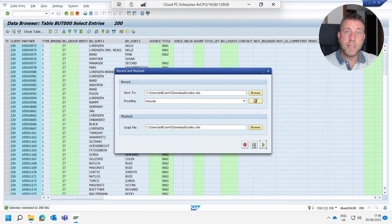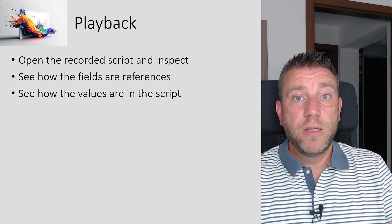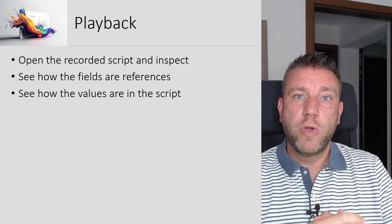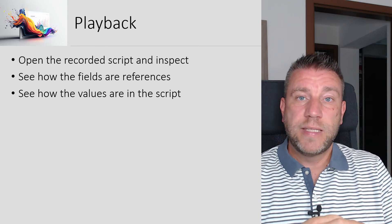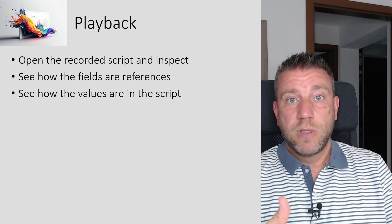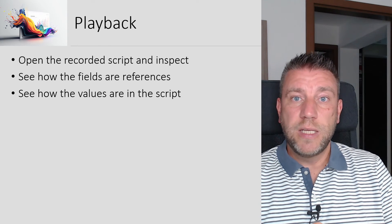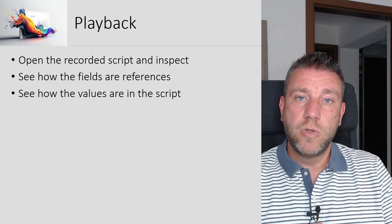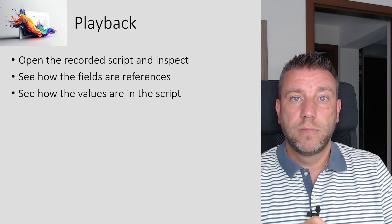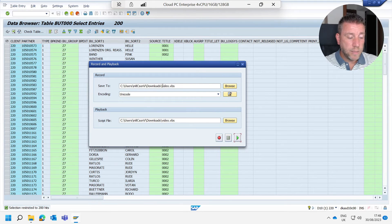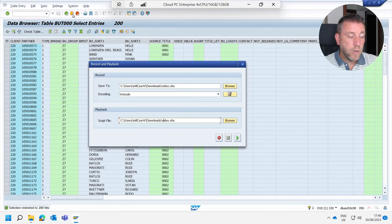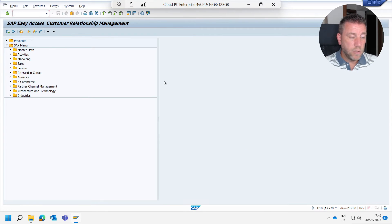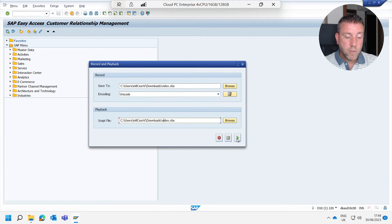I click the stop button and my script is recorded — it's that simple. We just recorded our actions in SAP GUI as we normally would, and at the end clicked stop. Now let's look at playback. Once you save the recording, the file name is automatically copied to the playback section, showing 'video.vbs.' I go back to the main screen, click Play, and you can see SE16 launches, the table name and filter are populated, and the selection is executed — showing the report exactly as we recorded it.